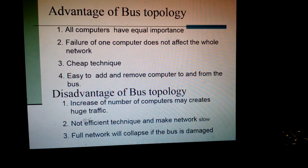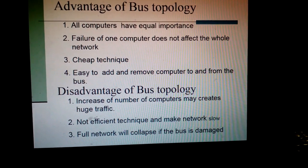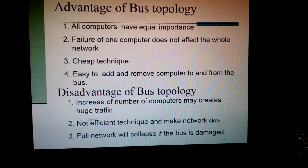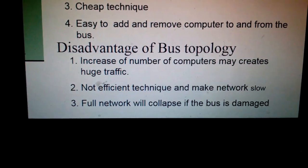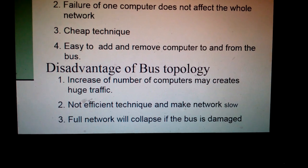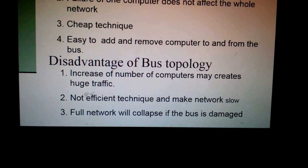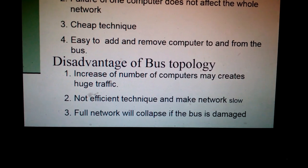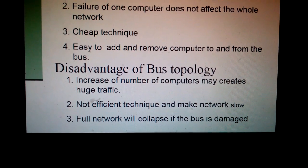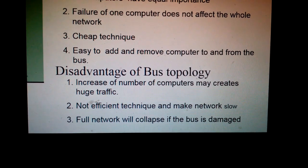These are the advantages of bus topology: all the computers have equal importance; failure of one computer does not affect the whole network; it is very cheap; and it is very easy to add and remove computers to and from the bus. It has also some disadvantages: if you increase the number of computers, huge data traffic jam may occur; it is not an efficient technique and makes the network slow; and the full network will collapse if the bus is damaged. So this network depends on the bus — if the bus is active, the whole network will be active.